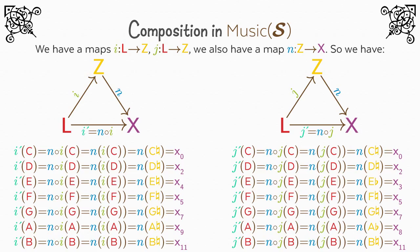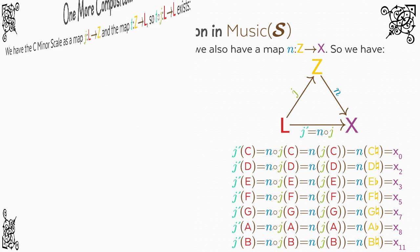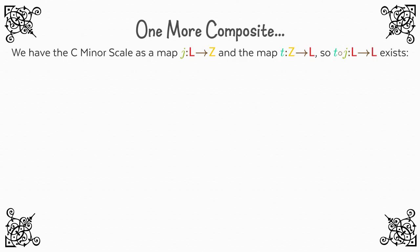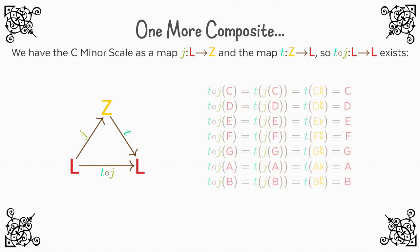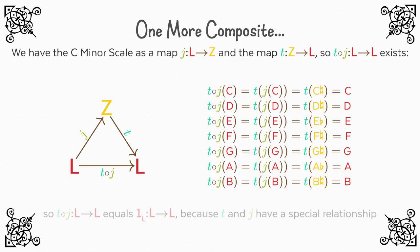There are other composites we can form in Music S. We have the minor scale as map J from L to Z and the map T from Z to L. The codomain of the first is the domain of the second, so we can form the composite T following J from L to L. If you look at it, you notice that T following J takes every element of L back to itself — we've mentioned another function with this property: the identity function. So T following J equals 1_L. This is only the case because T and J have a special relationship to each other, one that we will explore in lesson two.